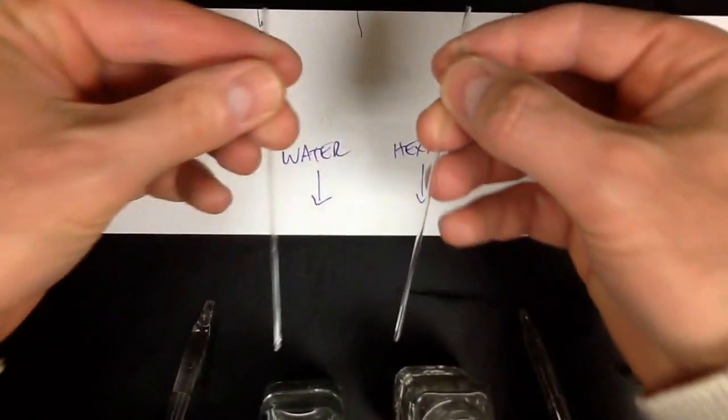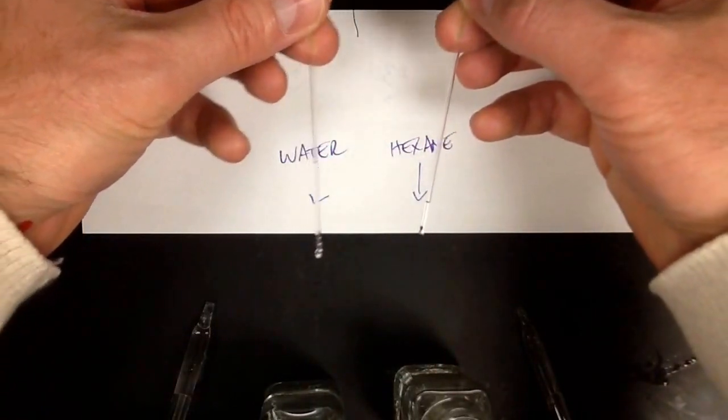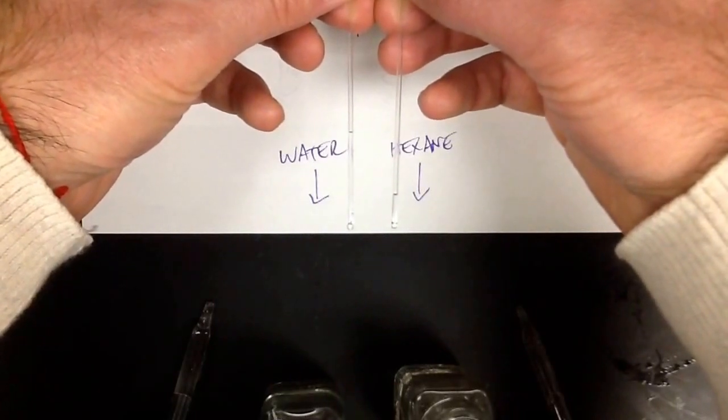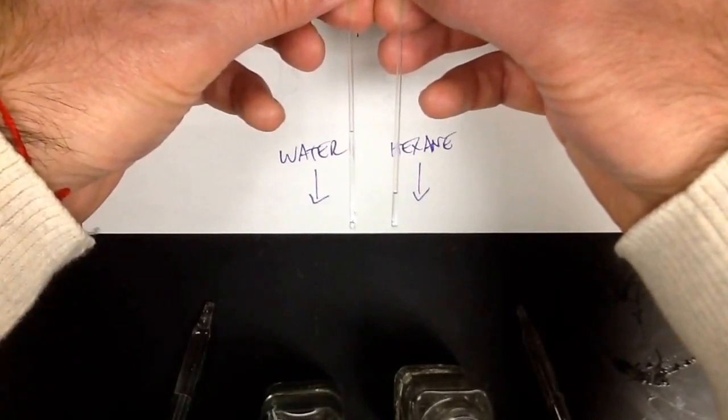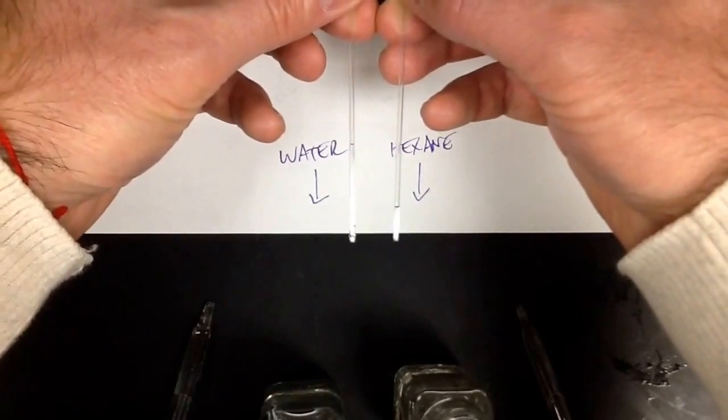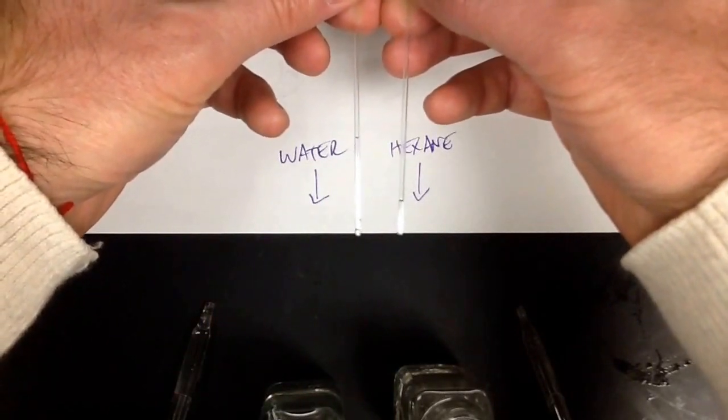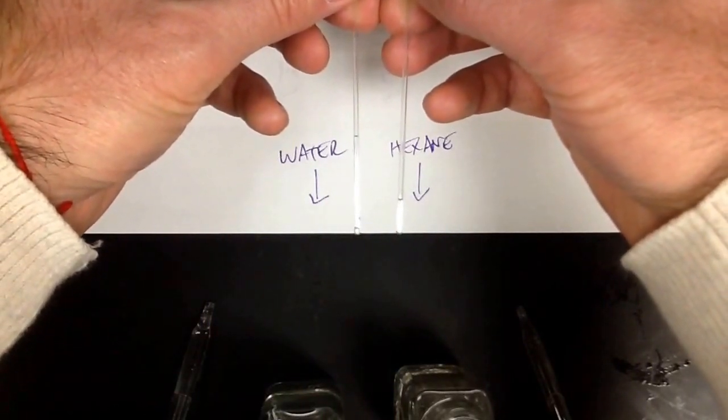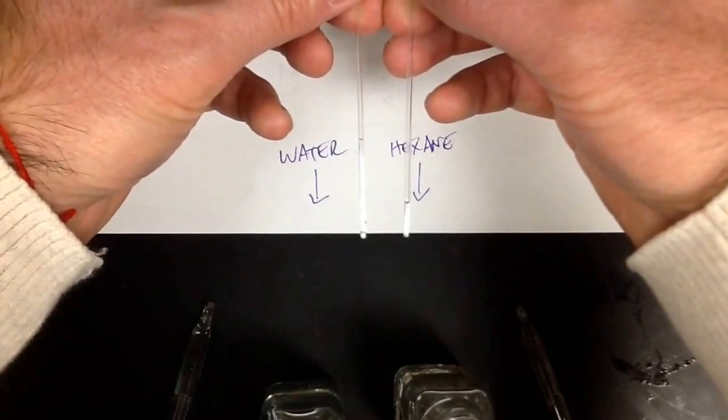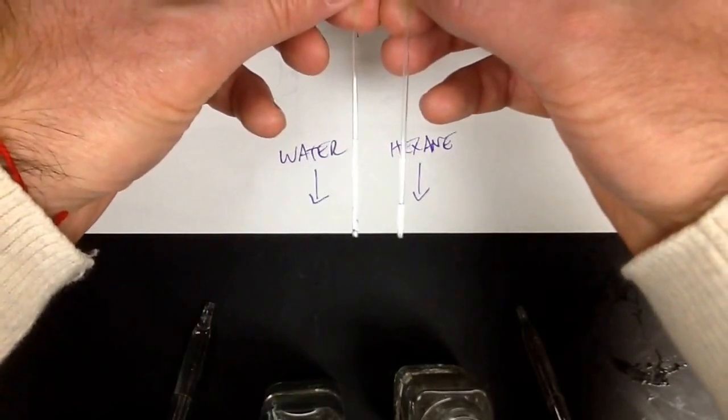So we'll notice there's a big difference in how much, kind of see on the white background a little bit better actually maybe, that the water went a lot further up in the capillary tube than the hexane did. So what conclusion can we draw from that? We can think about, well water, you can think about it as being more attracted to the material in the glass. Also, you can maybe think about surface tension as well.